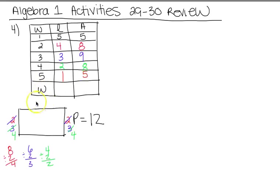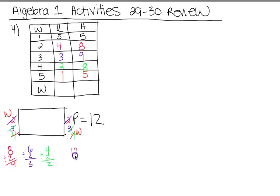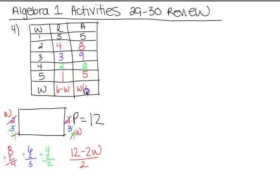You have to know how to figure out these general questions. Some of you tried to write L here, but you can't do that because we can only have one variable other than A for area. If I make my width W, I start with 12 for the perimeter and subtract 2W, giving the remaining amount for two sides. Divide that by 2 — 12 divided by 2 is 6, 2W divided by 2 is W — so the length is 6 minus W. Then area equals W times (6 minus W).